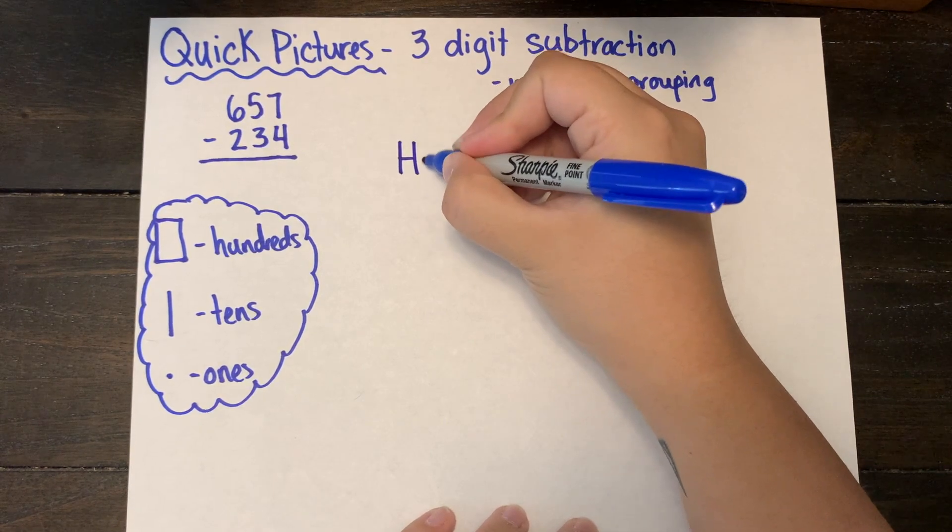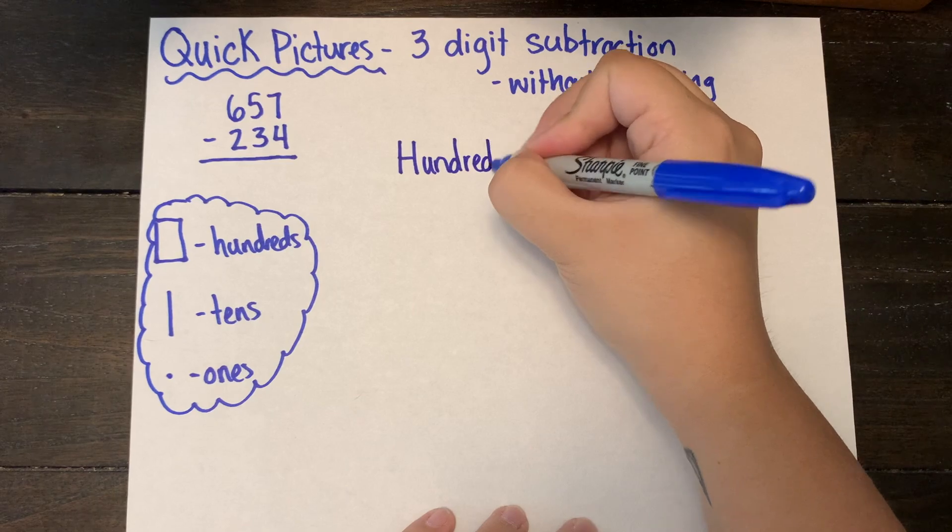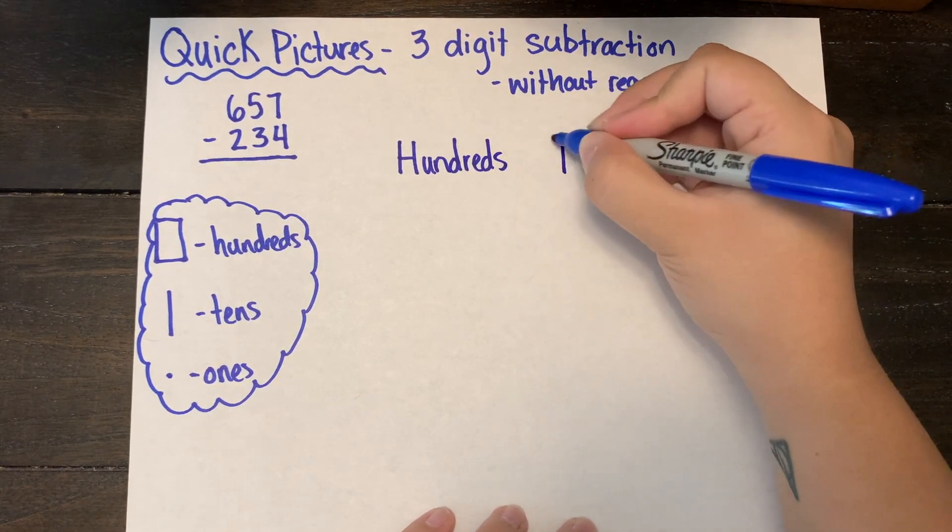I'm going to draw my hundreds, tens, and ones place value chart, and label them in the appropriate columns.